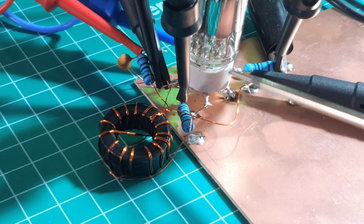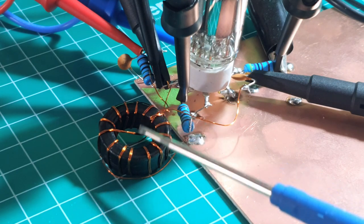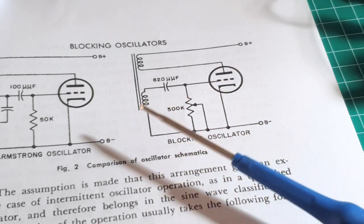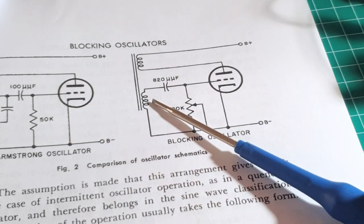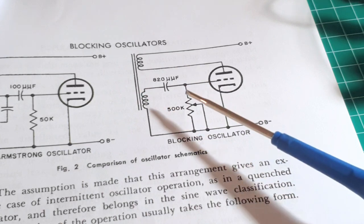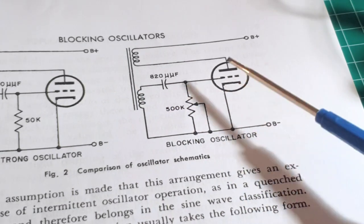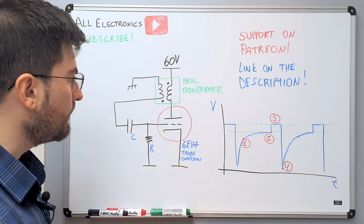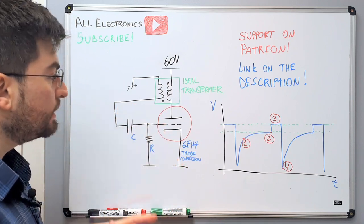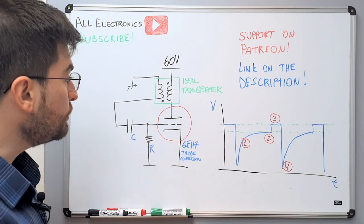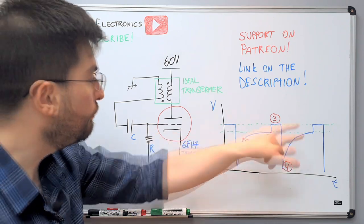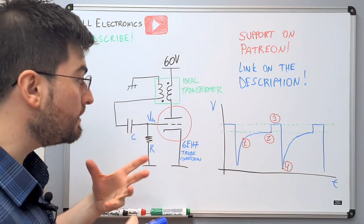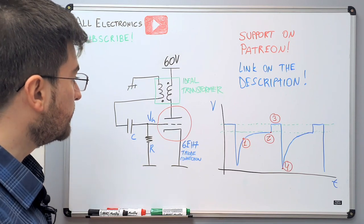This is the pulse transformer. We have the grid capacitor and grid resistor here. I used a toroidal core with bifilar windings. Pulse width and repetition rate come from a complex interaction between leakage inductance, magnetizing inductance of the pulse transformer, the grid capacitor, grid resistor, and tube characteristics. The best way to understand it is to look at the grid voltage — the magic happens at the grid.